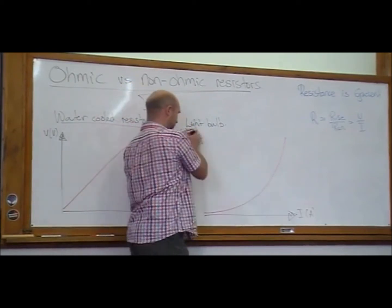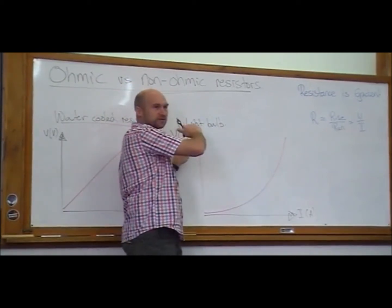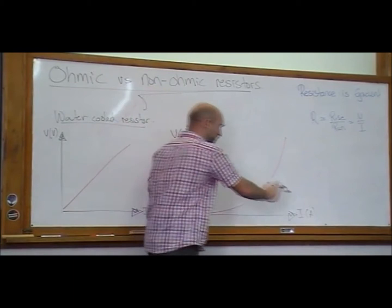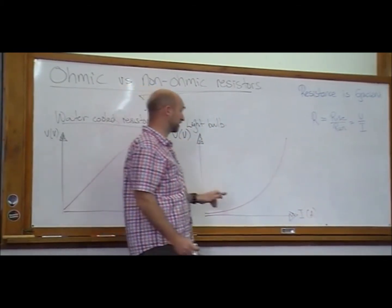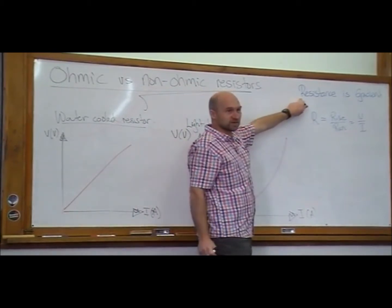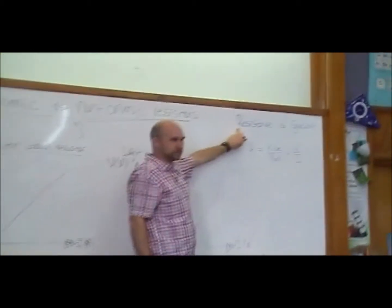But the reason we put the voltage, even though we're twiddling the voltage and changing the voltage, we don't write it down here where we've normally got the independent variable because we desperately want that the gradient is the resistance. That's really useful for us.